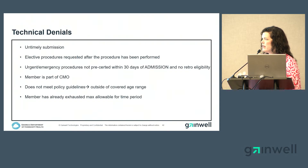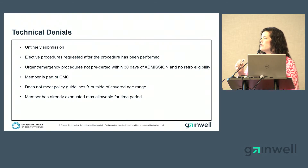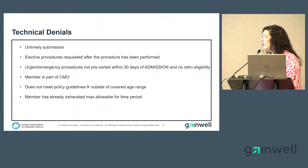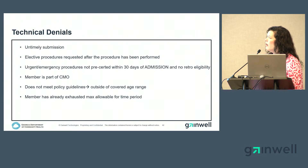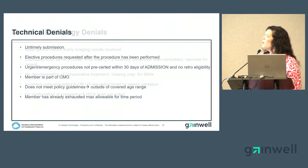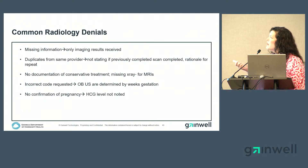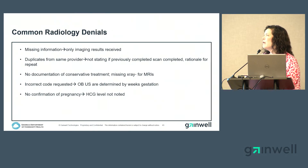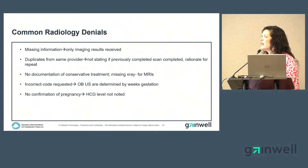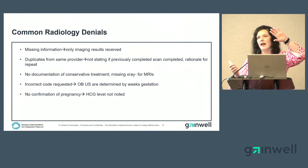For radiology, which is one of our most common review types with high denial volume: missing information — only imaging results were received, but we need the whole clinical picture including why the patient came in. Duplicates from the same provider occur frequently — for example, one staff member submits a PA and another submits a duplicate not knowing the first was already submitted. We have stops in the system to flag subsequent duplicates.